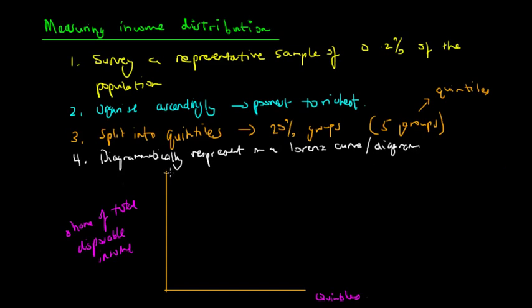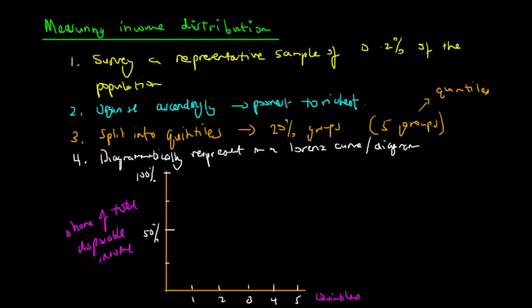On the Lorenz diagram, the y-axis goes from 0 to 100%, with the midpoint at around 50%. The x-axis shows the five quintiles — one through five — representing the percentage share of total disposable income in the economy. The Lorenz diagram shows the way income or wealth is divided or shared in an economy, organized by these quintiles.